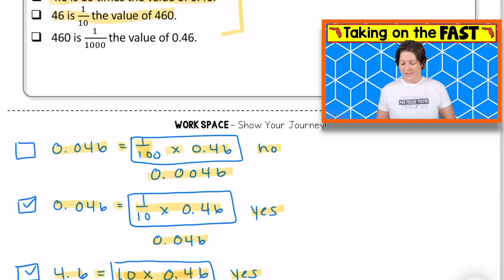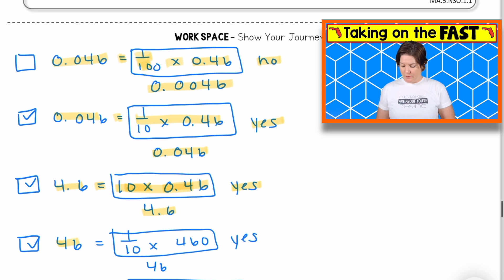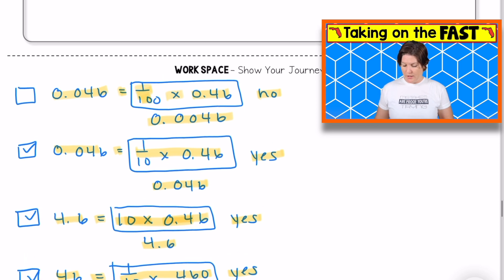We have 46 is one 10th the value of 460. 46 is one 10th of 460. That would be 46 and both sides of the equation are equal. So yes, there we go.